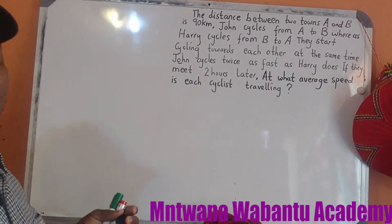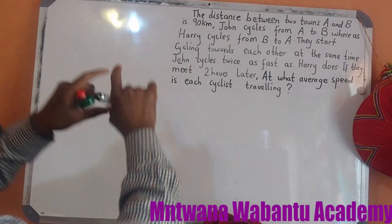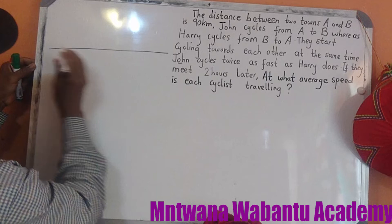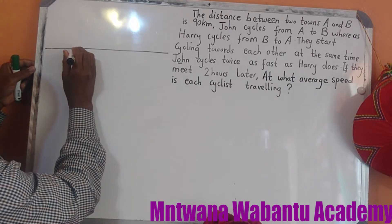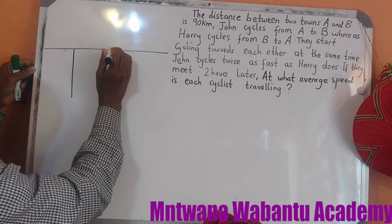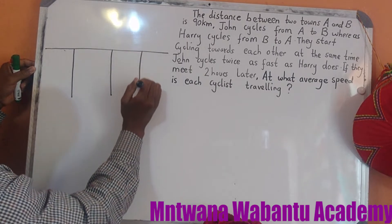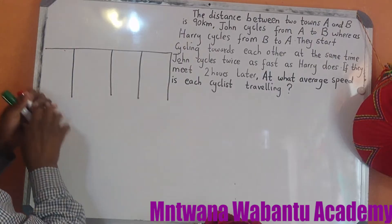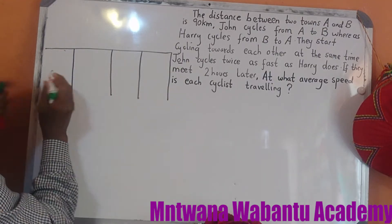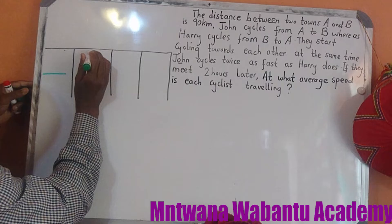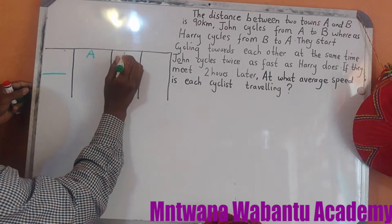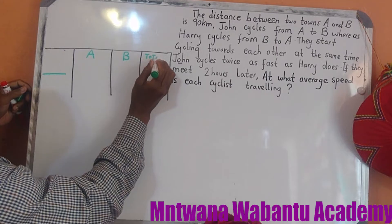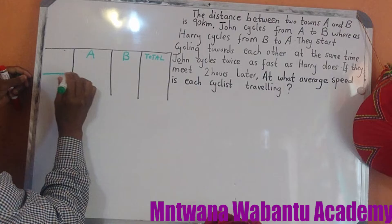There are a lot of ways you can solve this, but in college the common approach is to draw a table. So we're going to draw a table here and split it into three parts. The columns will represent the key values involved — time, distance, and speed.